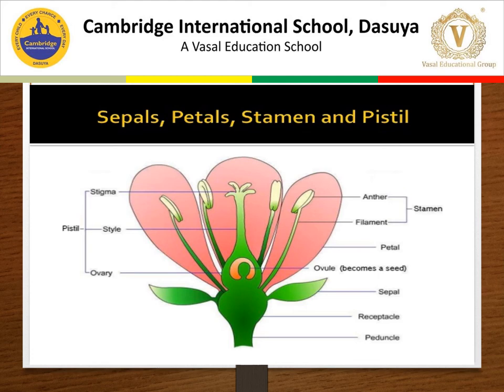Androecium, also called stamen, is the male reproductive part of the flower. They lie just within the corolla. There may be several stamens in the flower. Each stamen consists of two parts: one is the anther and one is the filament. Anther consists of four pollen sacs. Each pollen sac bears a powdery mass called pollen, and pollen contains pollen grains. These pollen grains are male gametes.